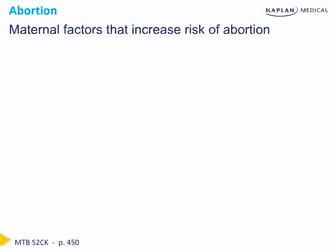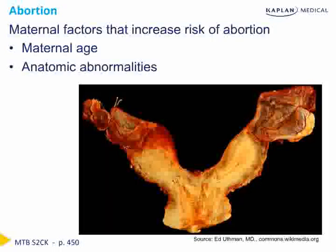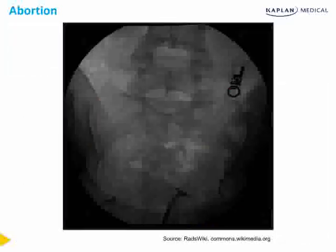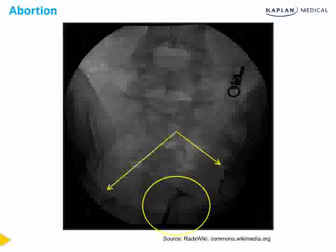There are several maternal factors that can increase the risk for abortion. The first and most important is advancing maternal age, which increases the risk of chromosomal abnormalities. Next is anatomic abnormalities — the first is uterine anomalies such as uterine didelphys, seen here. Another maternal risk factor which results in anatomic abnormalities includes exposure to diethylstilbestrol, which results in a T-shaped uterus, seen on hysterosalpingogram here. We see normal fill and spill of the fallopian tubes bilaterally, indicated by the arrows.